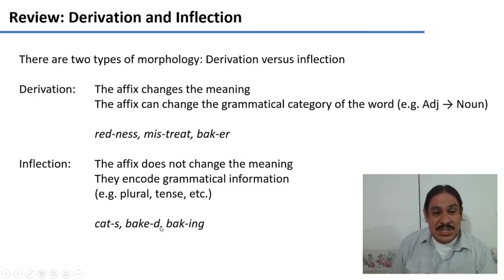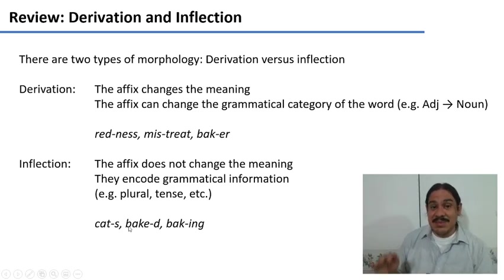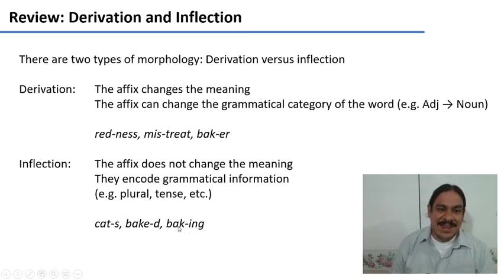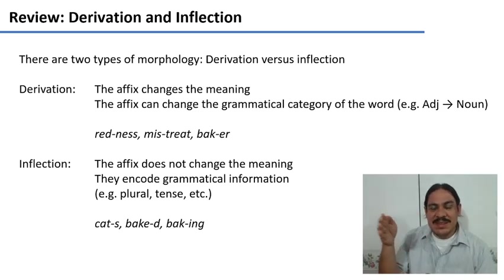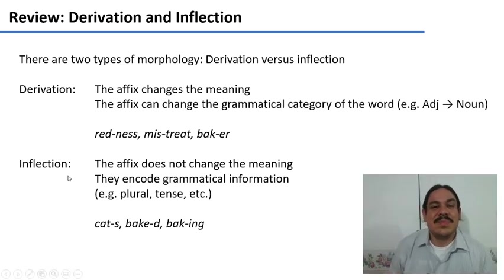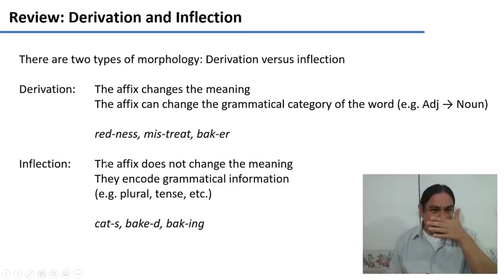Likewise, in 'baked,' the inflectional suffix is telling you that the action is in the past tense, but the action is the same — supplying heat to bread. In 'baking,' the suffix gives us information on how long the action is taking, but the action itself is the same. So derivational morphology changes the meaning of the root; inflectional morphology does not — it adds grammatical information.